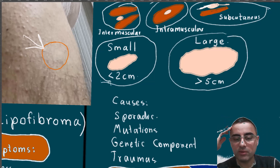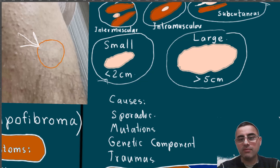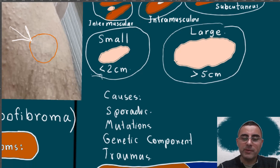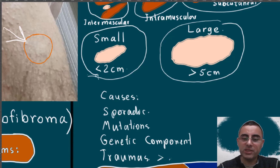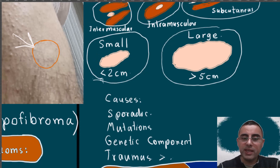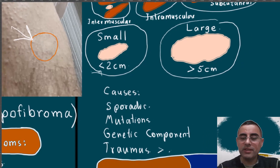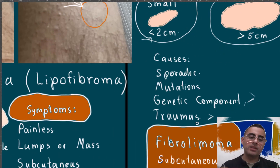Now let's talk about causes. Causes are usually sporadic with no specific cause identified. Sometimes there is a genetic basis — spontaneous mutations or inherited patterns. It can also develop after trauma, which carries a slightly higher risk of malignant transformation. There is a hypothesis that it can be autosomal dominant in some cases, but such genetic basis is not fully understood.